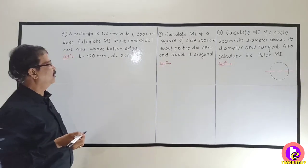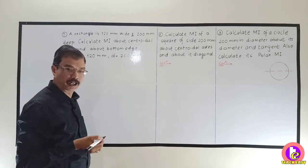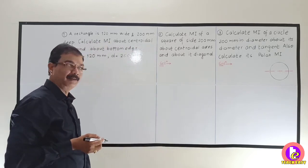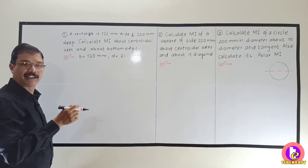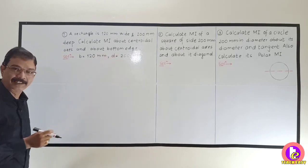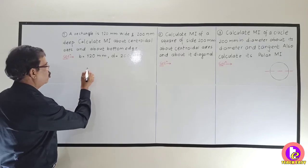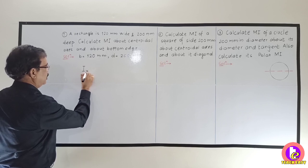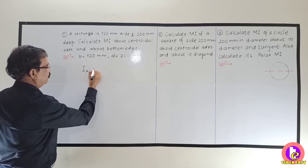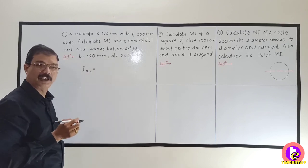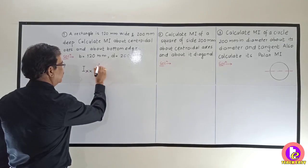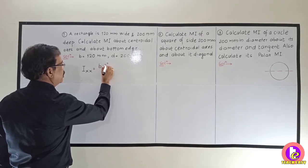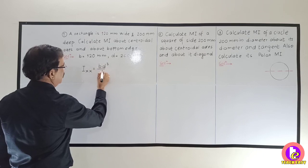We want to find out Moment of Inertia about the centroidal axis, meaning about the XX axis and about the YY axis. We also want to find out Moment of Inertia about the base, that is the bottom edge. Let us find out the Moment of Inertia about the Horizontal Centroidal Axis IXX. The standard formula for a rectangle about the XX axis is B into D cube divided by 12.